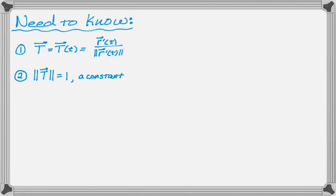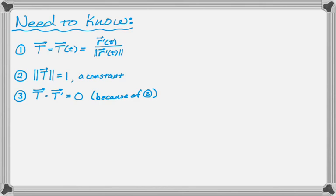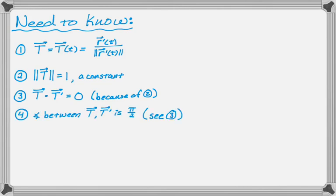That leads to the next thing, which is that T dot T prime is equal to zero. The reason that is true is because the magnitude of T is a constant. There's a theorem: anytime the magnitude of a vector is constant, its tangent vector will be orthogonal to its radius vector. So the angle between T and T prime is pi over two, because they're orthogonal.